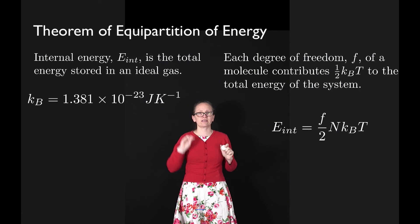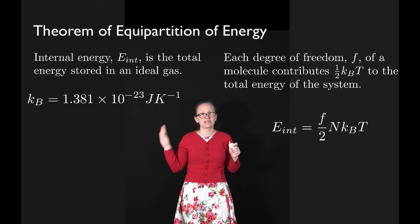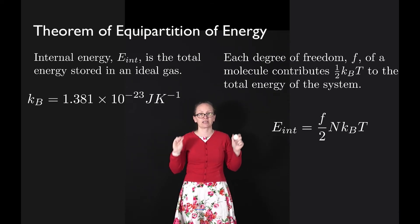In this equation, f is the number of degrees of freedom, N is the number of molecules making up our gas, kB is Boltzmann's constant, and T is the temperature measured in Kelvin.